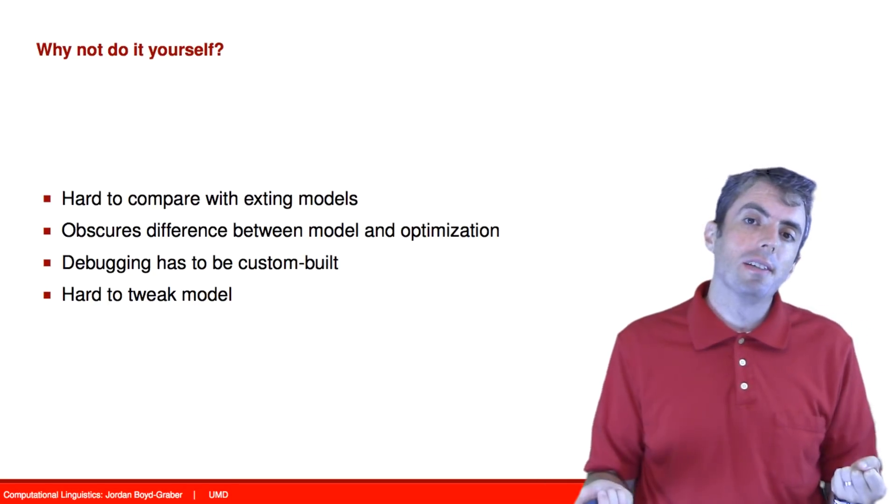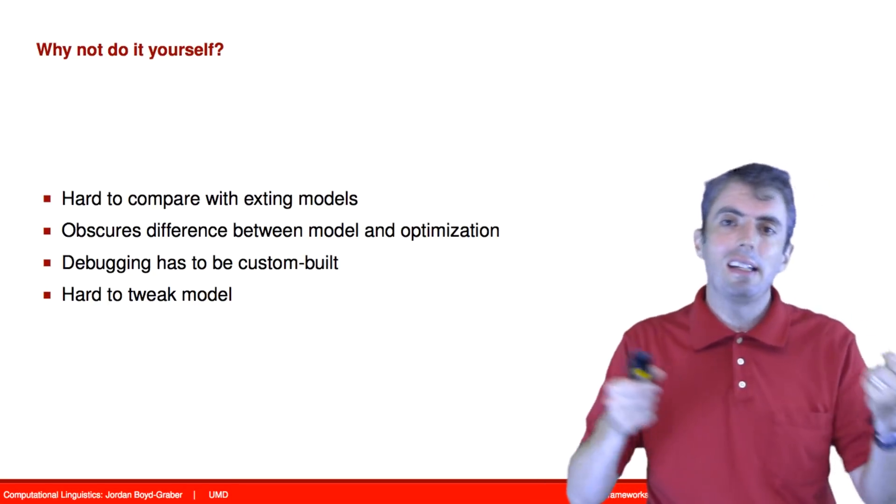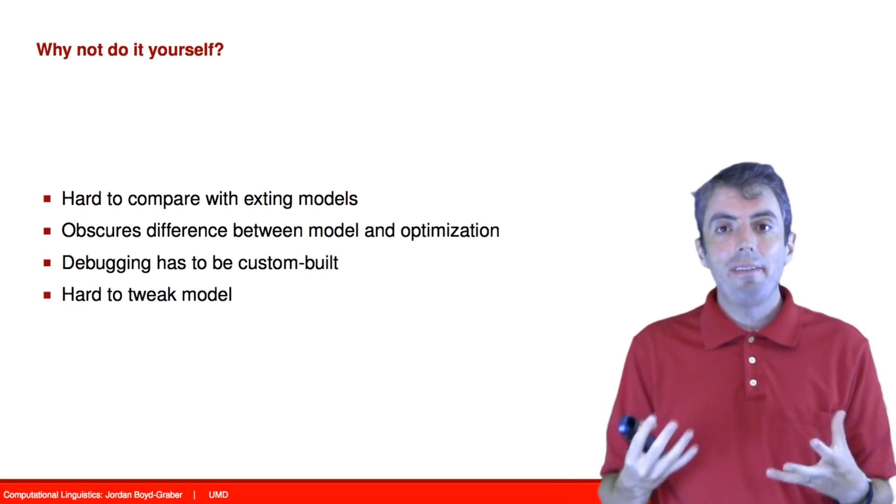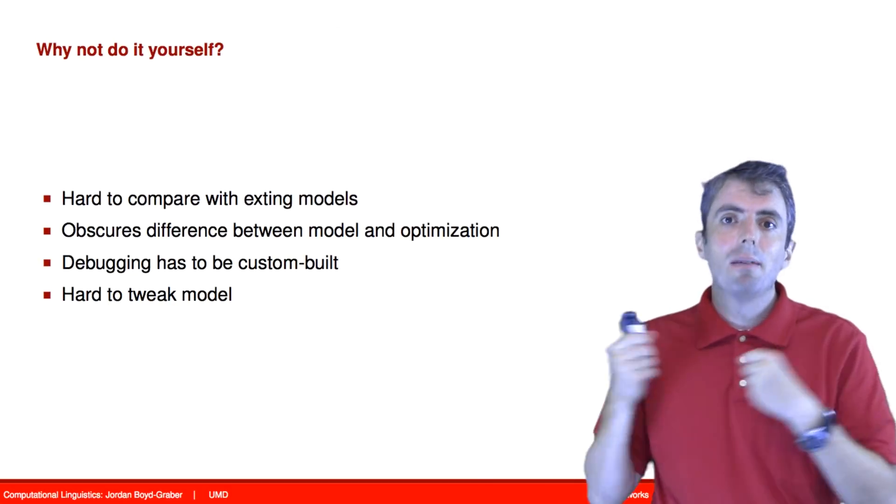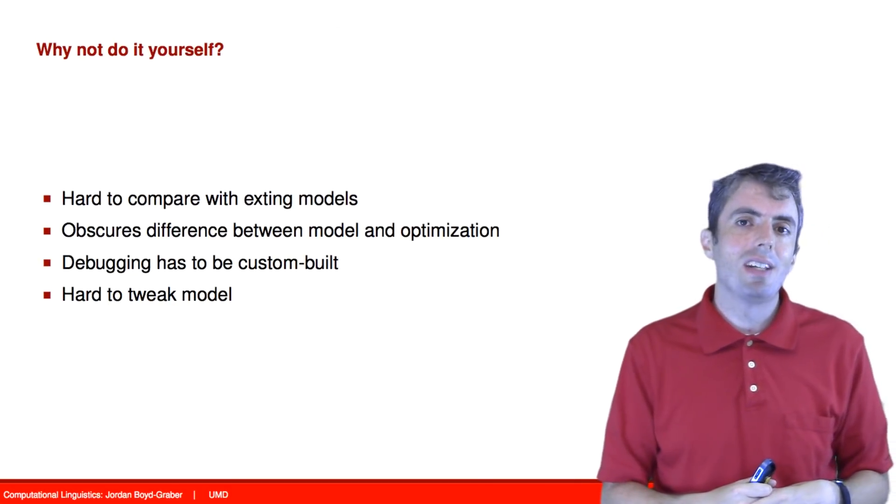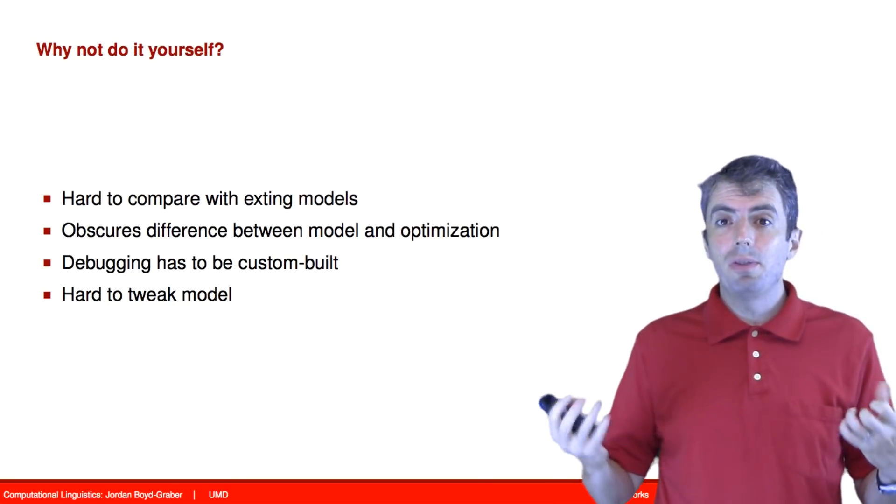A common problem in machine learning is the difference between model and optimization. Often a result in machine learning is the product of a combination of some model plus an optimization algorithm. So how do you separate the two? Often it's very difficult.